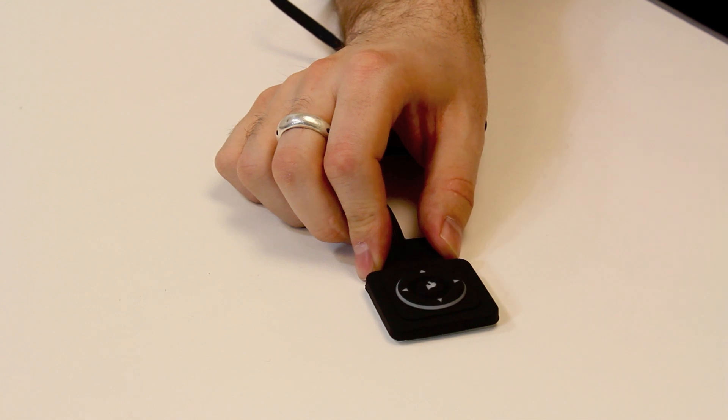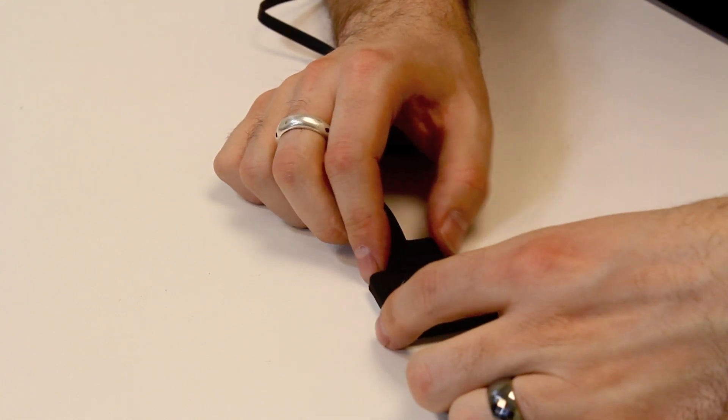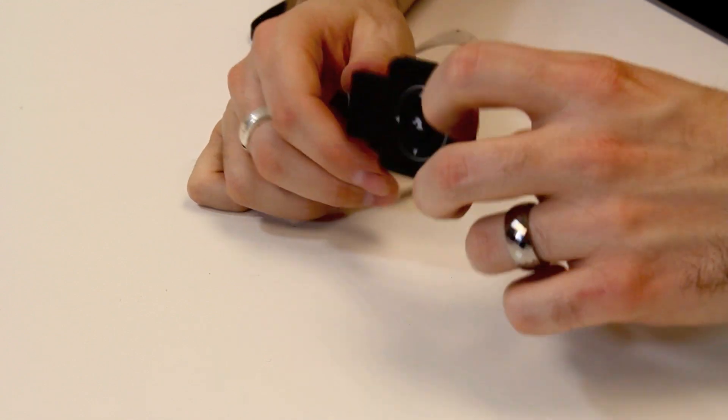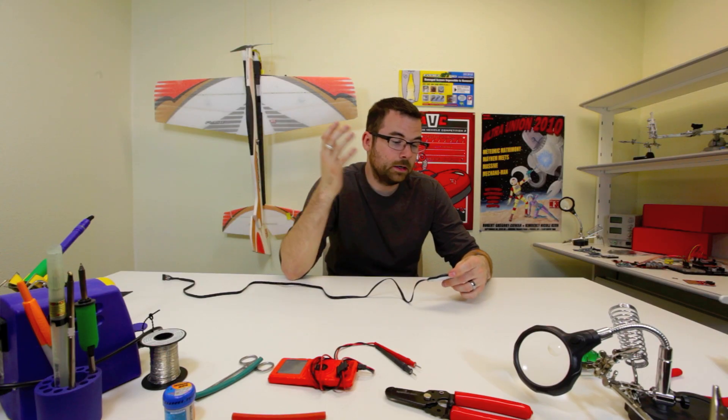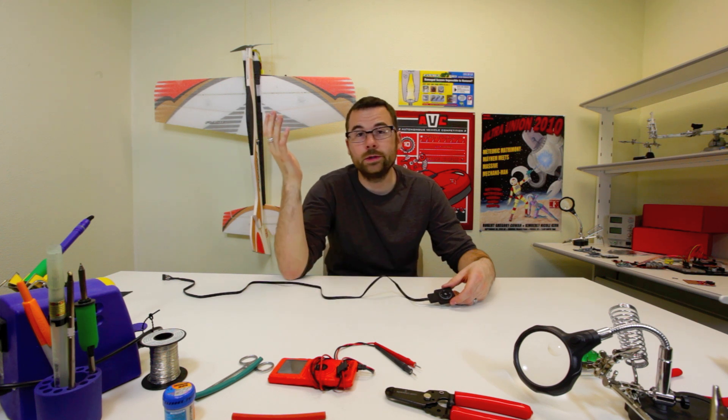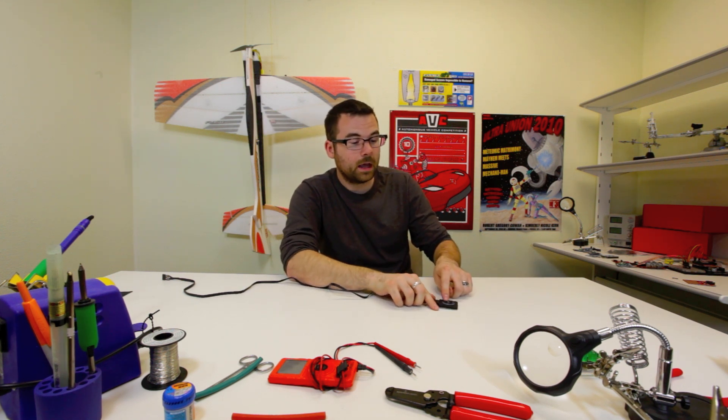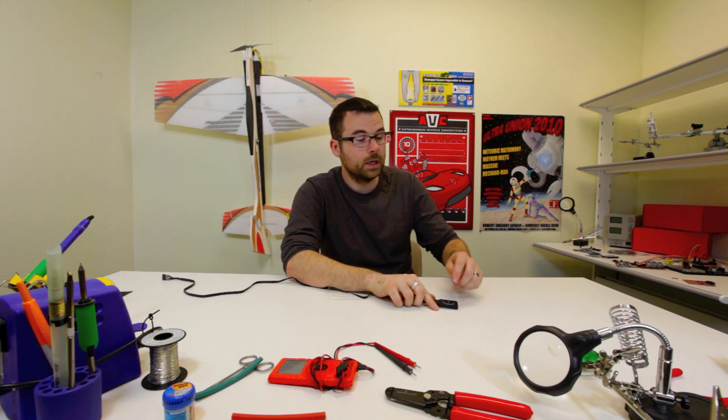So what it's got is it's got an up, down, left, and right button as well as this enter button which is a SparkFun flame. And the whole thing is pretty well sealed up, so it is going to be pretty much weatherproof. It's designed to be sewn into clothing, sewn into your next e-textiles project. And it even has a backlight in here, which is red.